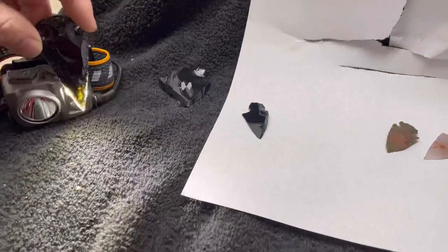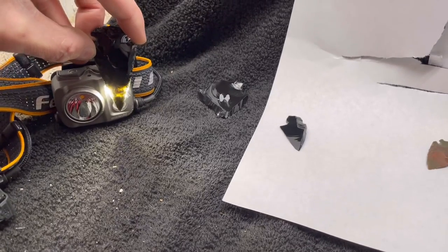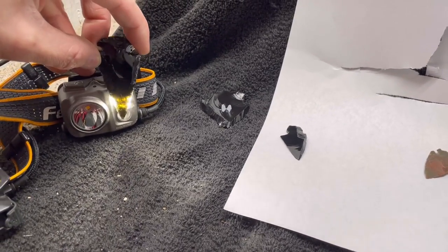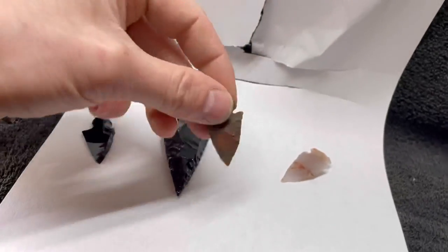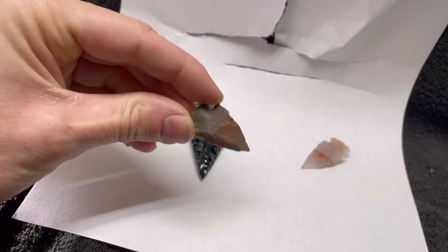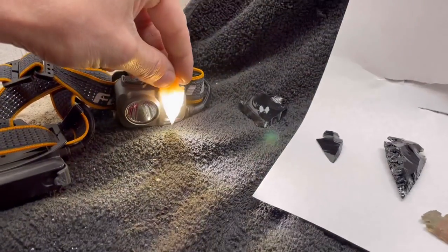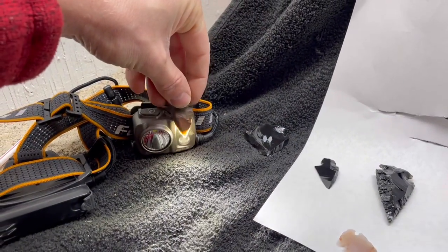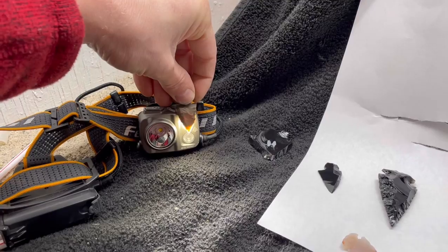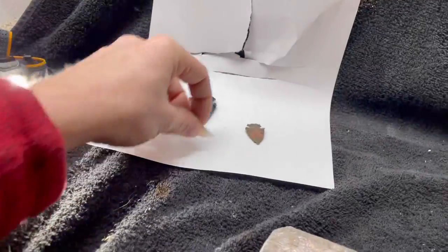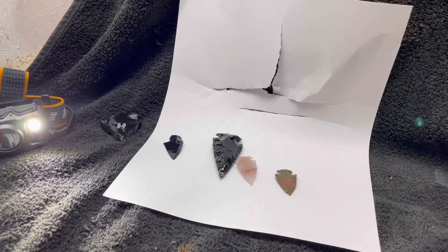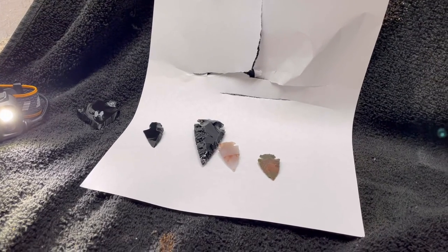This is a green obsidian which lets a lot more light through as you can see. This one is made out of flint and this one is made out of agate. You see the agate lets a lot of light through and the flint not very much. Maybe a little on the edge there when it's thin. So let me set up and we'll see what happens when we put them in acid.